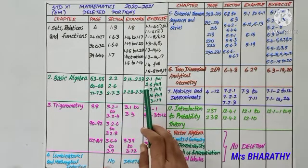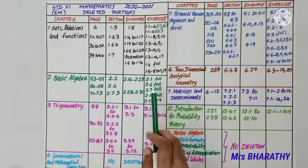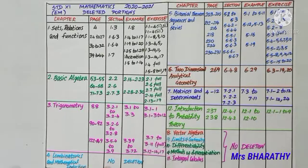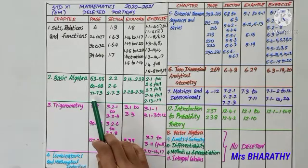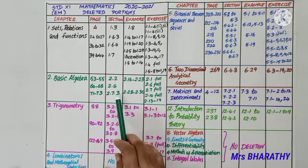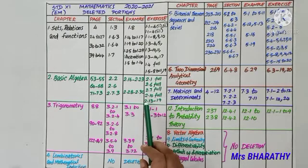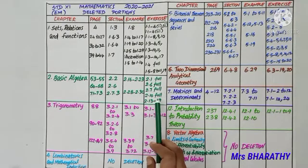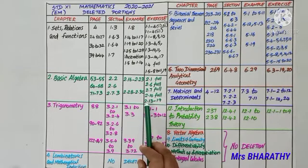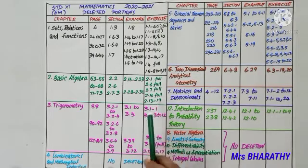From page number 64 to 68, polynomial functions division algorithm are deleted, section 2.6 and exercise 2.6 and 2.7 are deleted. From page number 71 to 73, section 2.7.3, inequalities is deleted. Exercise 2.10 is fully deleted. In objective type questions, not all these portions are coming, only 19th question is deleted.